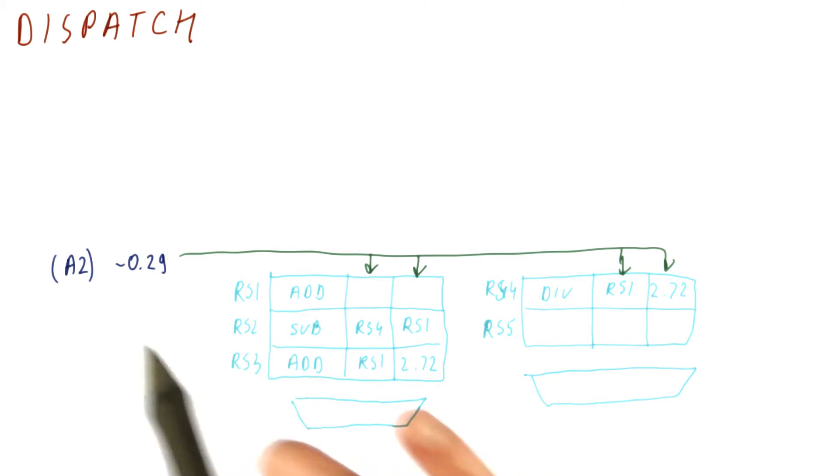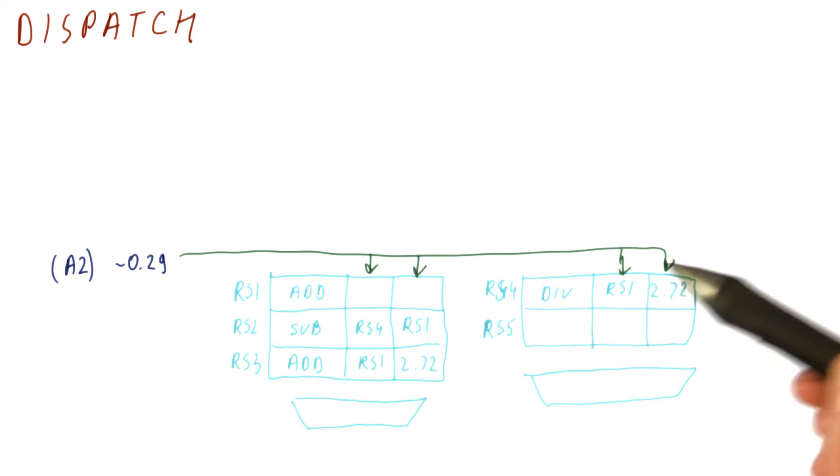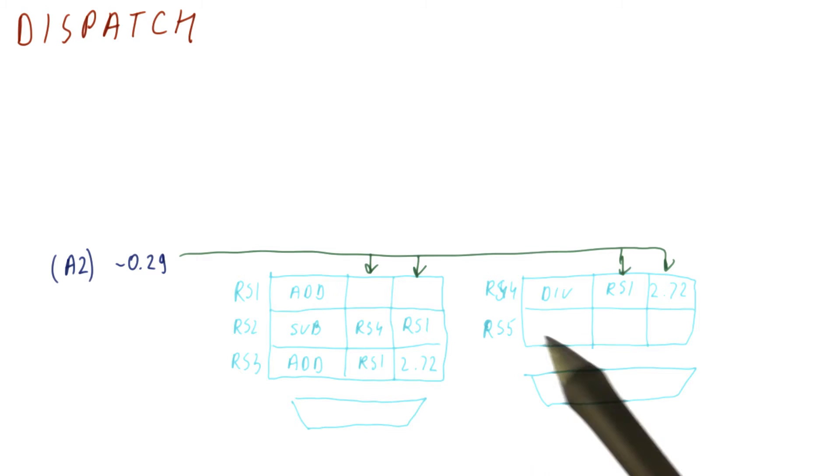So in the same cycle usually we'll have both of them. So we will consider a situation where we can actually at the beginning of the cycle do this and then towards the end of the cycle actually choose the instructions that are ready to go. None of these instructions are ready to go. So if we did it the other way around in this cycle nothing would really dispatch.